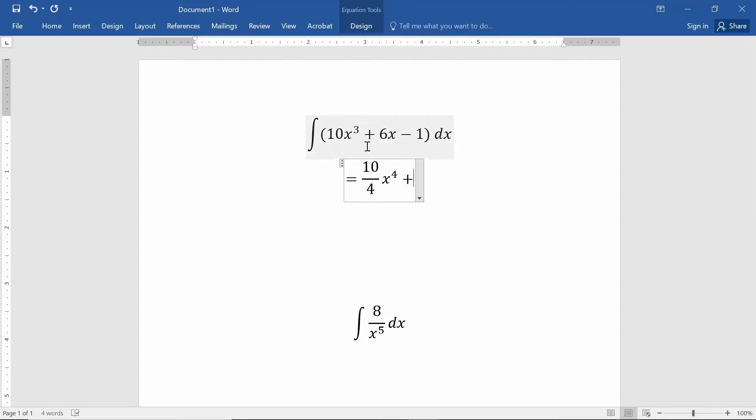On the second term, I'd take the x and raise it to the power of 2, and the coefficient would be 6 divided by 2. I have a -1, so -1 times x would be my antiderivative of -1, and then as always, I have to tack on a +C.